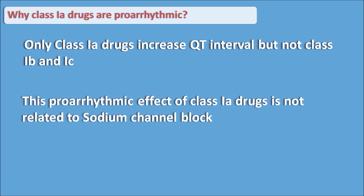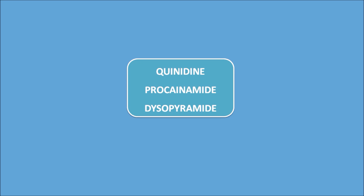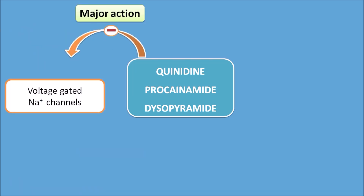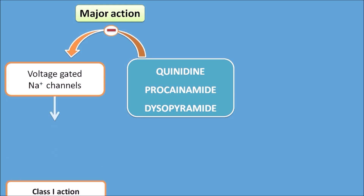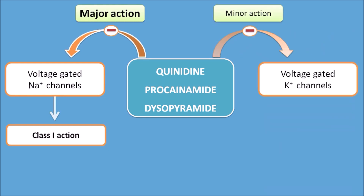The proarrhythmic effect of class 1A drugs is not related to their main mechanism of action, which is sodium channel blockade. They have an additional action of blocking potassium channels, which is responsible for their proarrhythmic effect. So drugs like quinidine, procainamide, and disopyramide show two types of action: a major action on voltage-gated sodium channels (class 1 action) and a minor action by blocking voltage-gated potassium channels (class 3 action).